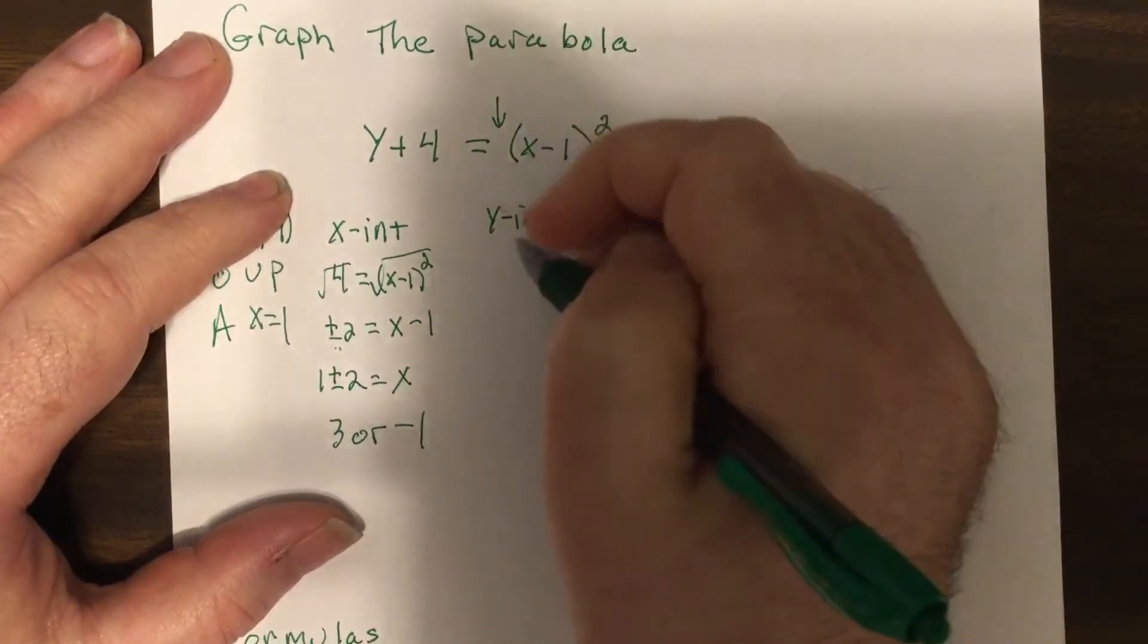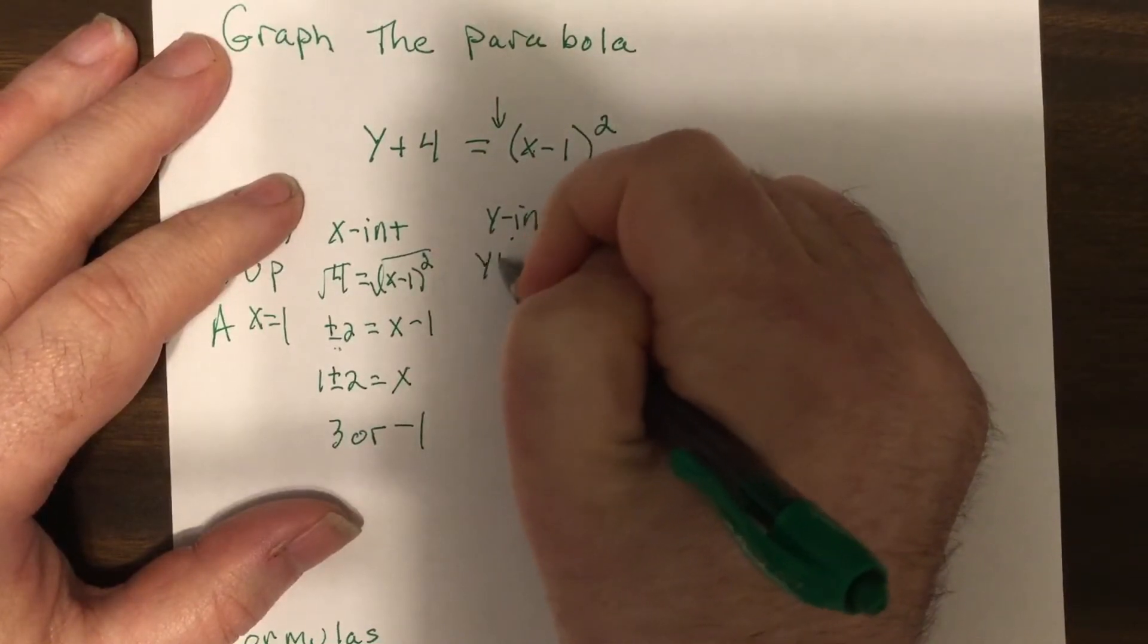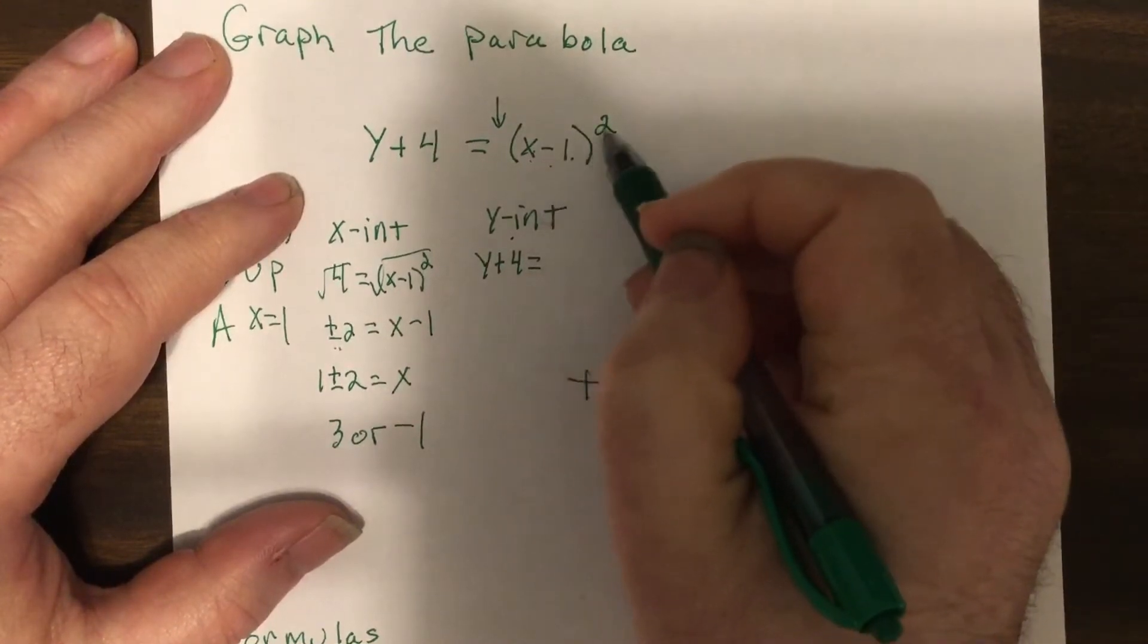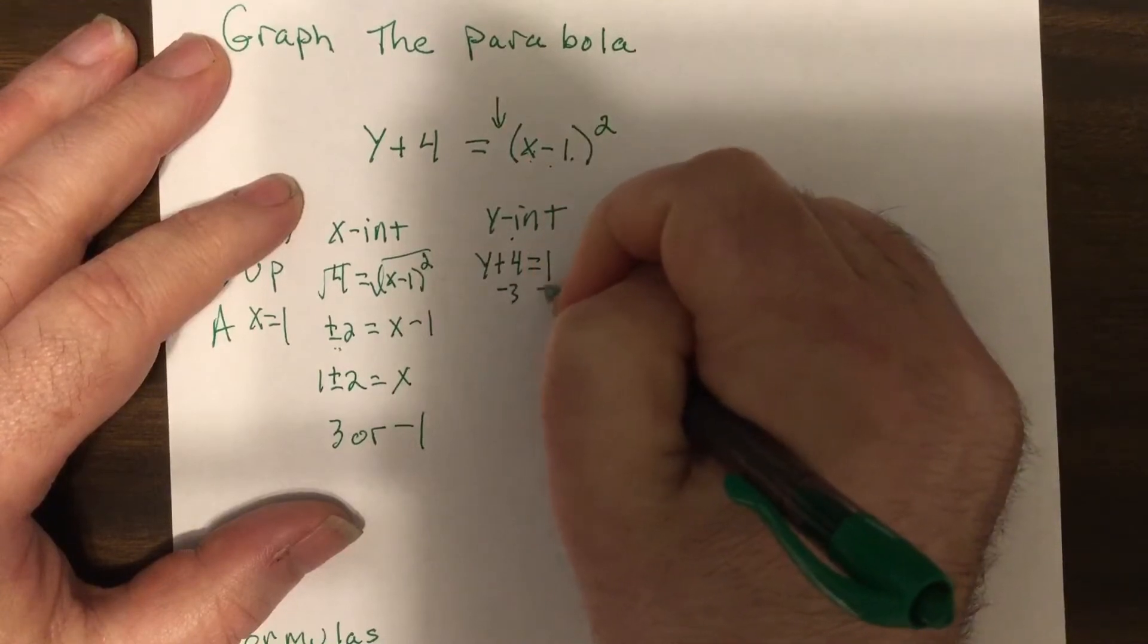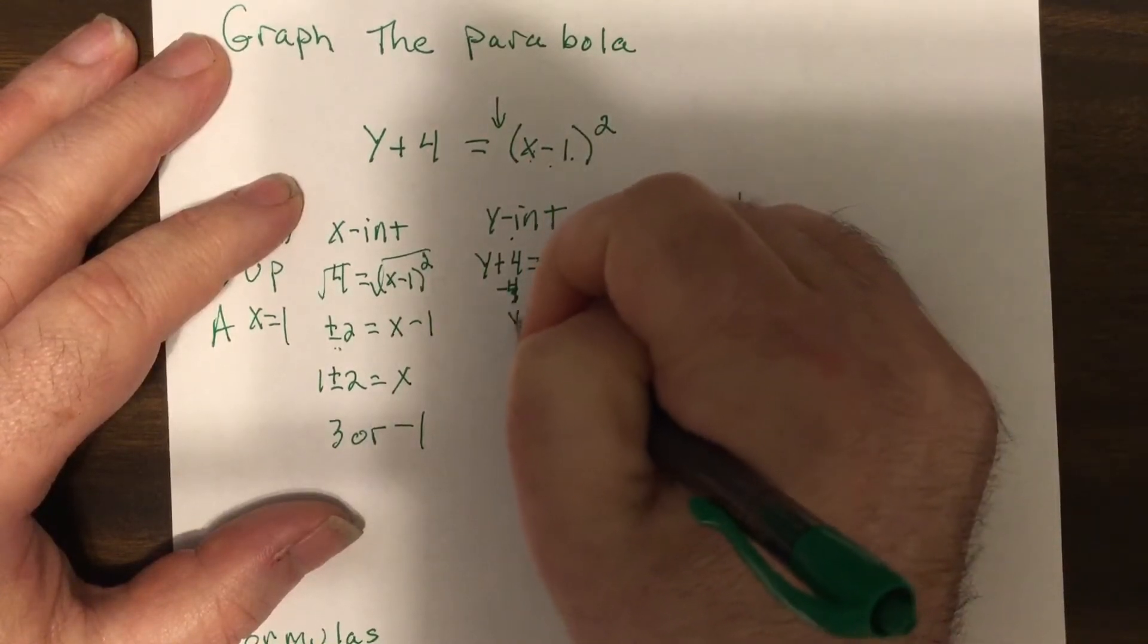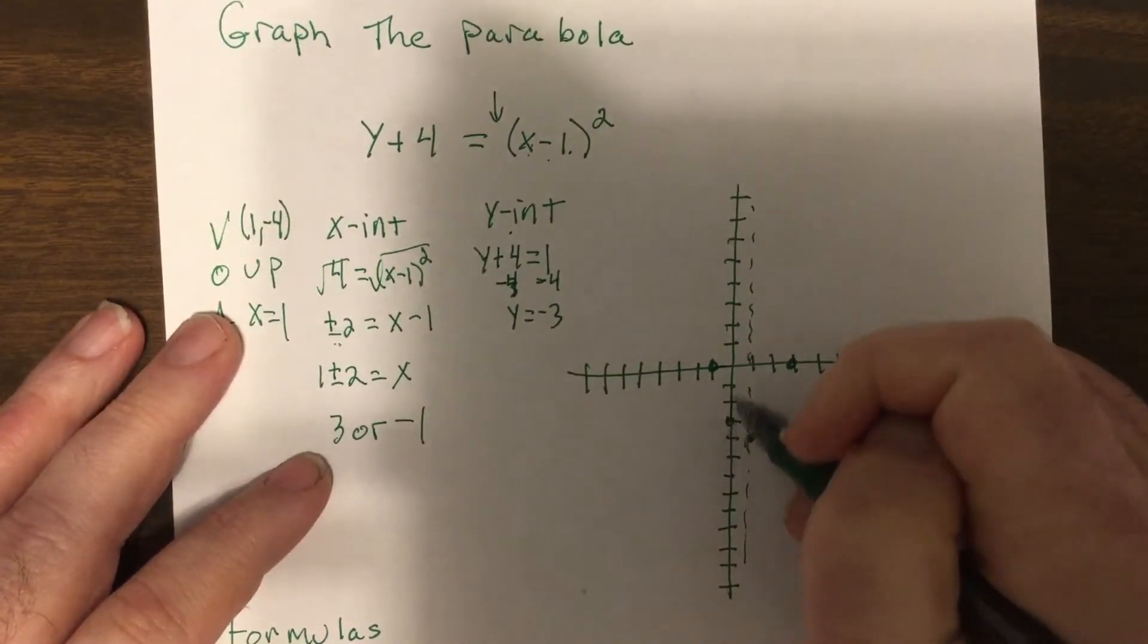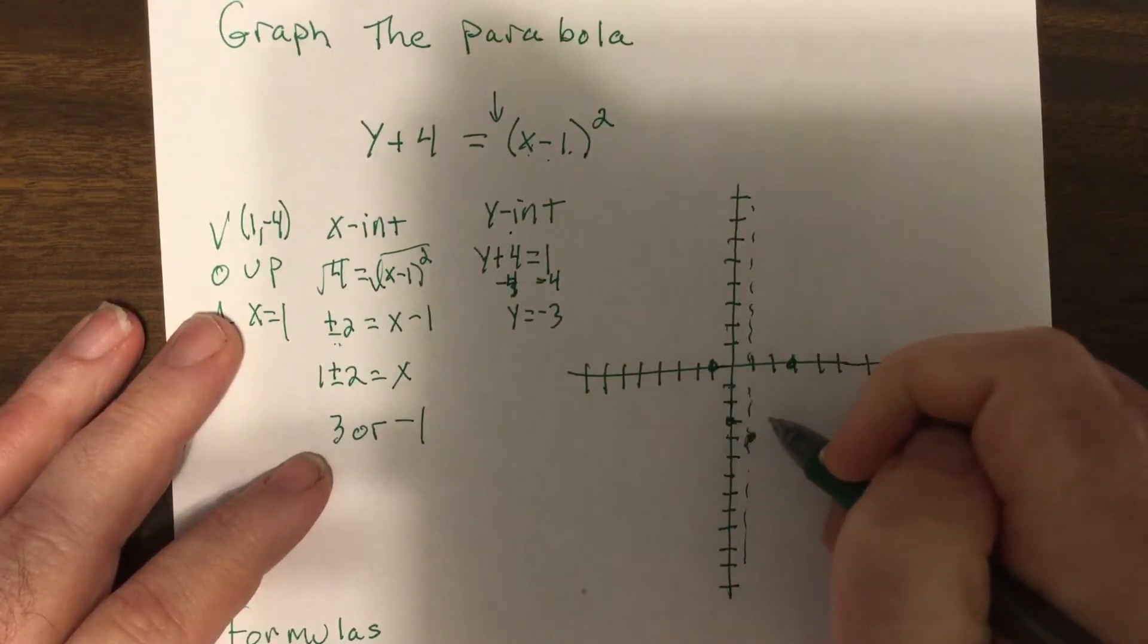The y-intercept, put zero in for x, which should be very straightforward. Zero minus one is negative one, squared is one, subtract four. Oops, I don't know why I did that because the answer is negative three. And I had that on my brain. Now here's negative three, one two three on the y-axis. If there's a point one unit to the left, there's a point one unit to the right.